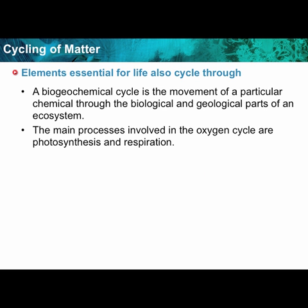The main processes involved in the oxygen cycle are photosynthesis and respiration. Photosynthesis uses sunlight, carbon dioxide, and water to make sugar and oxygen. Then in respiration, sugar and oxygen are converted in the mitochondria with special enzymes into carbon dioxide, water, and ATP. So there's your cycle of oxygen, water, free oxygen, and carbon in carbon dioxide and sugar — it just keeps cycling through the biosphere.